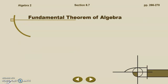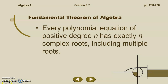This leads us to the fundamental theorem of algebra. Every polynomial equation of positive degree n has exactly n complex roots, including multiple roots. In layman's terms, it is what I've been saying this whole time: if the degree of my polynomial is 3, I've got 3 roots; if it's 5, I've got 5 complex roots; if it's 1, I've got 1 complex root. That can include multiple roots, so it is possible for all 3 roots to be exactly the same, or some roots may be repeated.